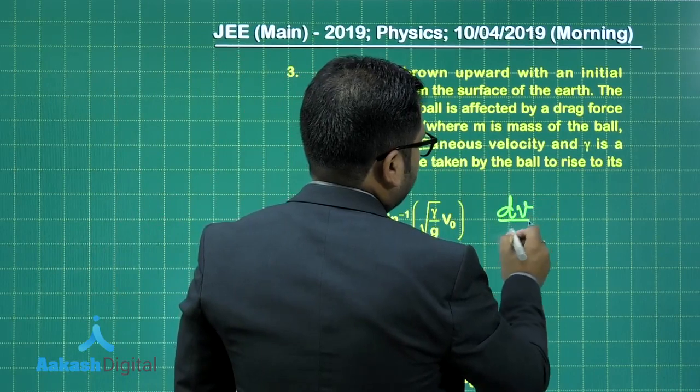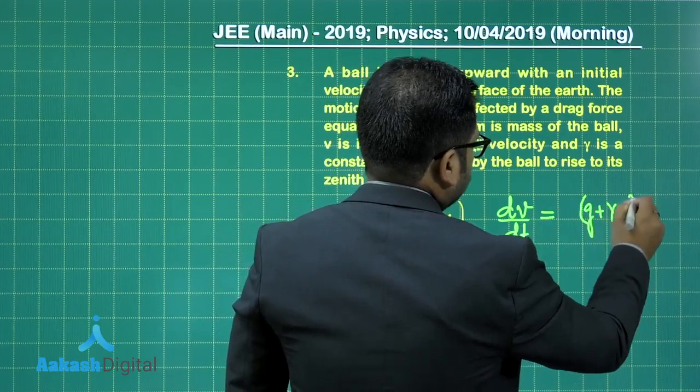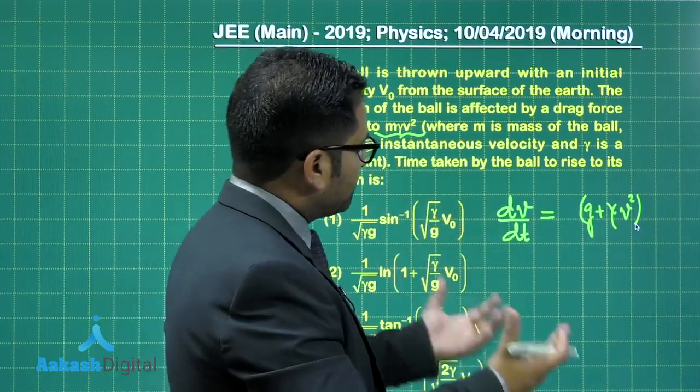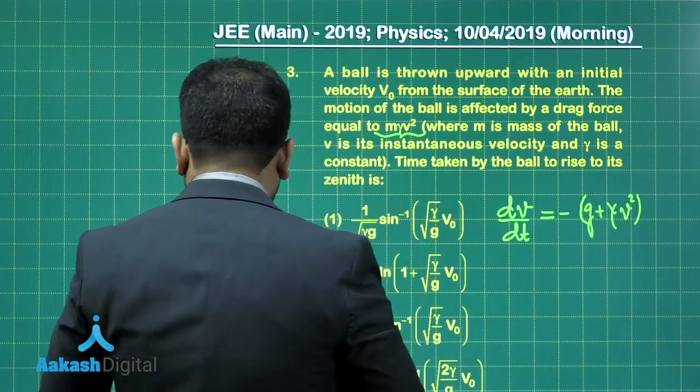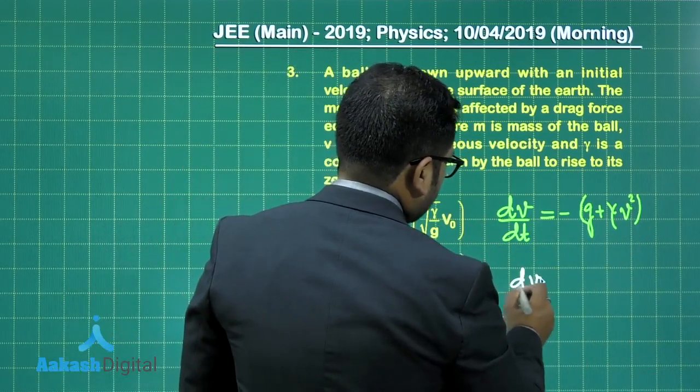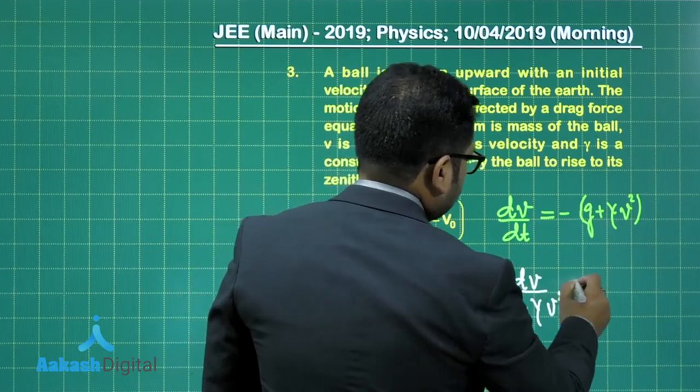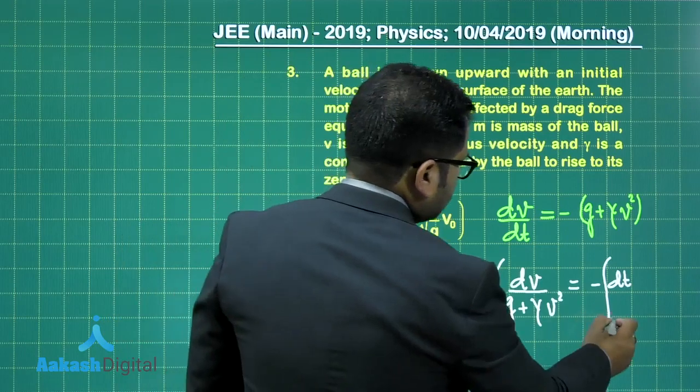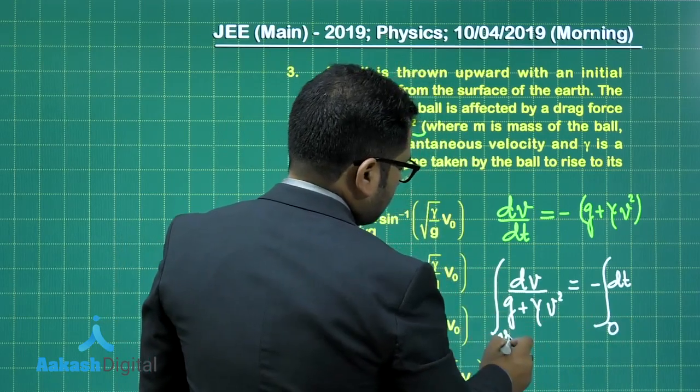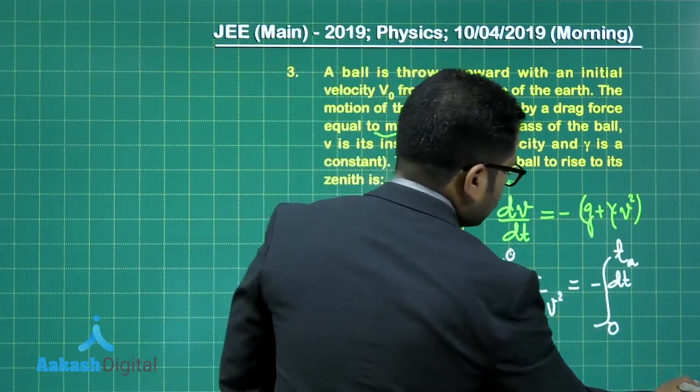So, this comes out to be, dV/dt will be equals to g plus γV². And since the speed of the ball decreases with time, quite obviously, I need to put a negative sign here. And now, it's just an integration, and that too, an integration of a very standard known format. It's not something very unexpected or peculiar one. That's the case. And let me plug in the limit. At t equals to zero, the speed was given to be V₀. At t equals to tₐ, let's say, the ascent time, the speed is zero.